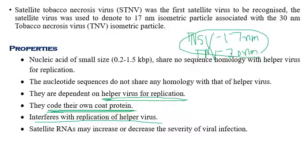The satellite virus gets necessary requirements like enzymes from the helper virus. After obtaining these enzymes, the satellite virus interferes with the replication of the helper virus. For example, if the helper virus is producing enzymes used by the satellite virus, the helper virus may not be able to replicate properly. This interference does not always occur, but it happens most of the time.